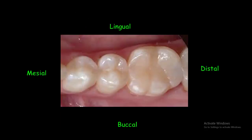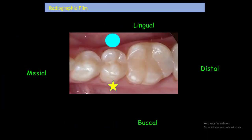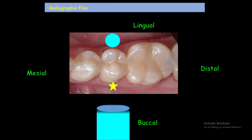A periapical radiograph is a two-dimensional image of a three-dimensional object. When two objects are in different buccal and lingual positions, taking two radiographs at different angles can determine their position. The first radiograph is the straight angle. In straight right-angle periapical radiography, the x-ray is perpendicular to the object and the film, so the two objects will be superimposed on each other.